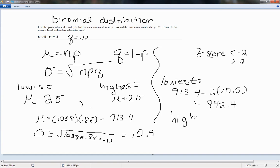And our highest usual value would be 913.4, our mean, plus 2 times our standard deviation, which would be 934.4. So what we're saying is any value between these two numbers would be usual. Anything less than 892.4 would be unusual, and anything greater than 934.4 would be unusual.